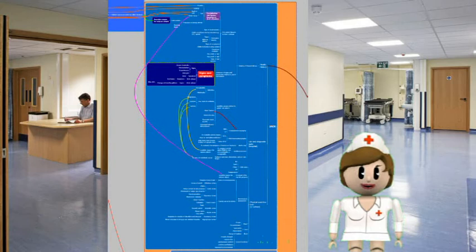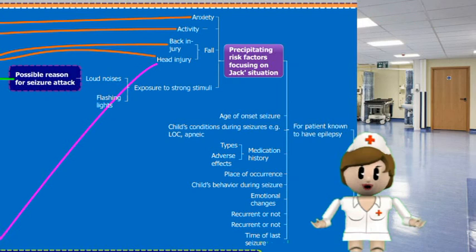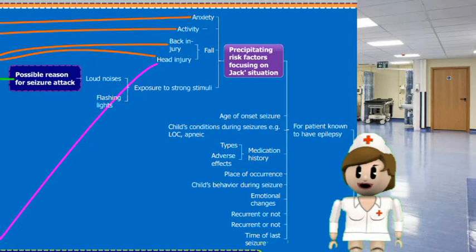For health history, we should assess the time of last seizure and age of onset seizure if he has previous experience. We should also know about his condition during seizure — for example, did he lose consciousness? Any emotional changes before and after the seizure? Next, we should assess if he has been taking any medications and know about the types and adverse effects. We should also assess the place of seizure occurrence and any risk factors associated with seizure, such as emotional status, fall history, and strong stimuli.